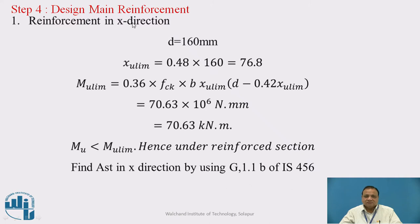Step 4: Design main reinforcement. Both reinforcements in X and Y direction are main reinforcement. Reinforcement in X direction: effective depth is 160 mm. MU limit equals Xumax times D, 0.48 for Fe415. 0.48 times 160 equals 76.8. MU limit: using C times lever arm, 0.36 times fck times b times Xumax times (d minus 0.42Xumax) equals 70.63 times 10^6 N.mm equals 70.63 kN.m. Mu is less than MU limit, hence under reinforced section.